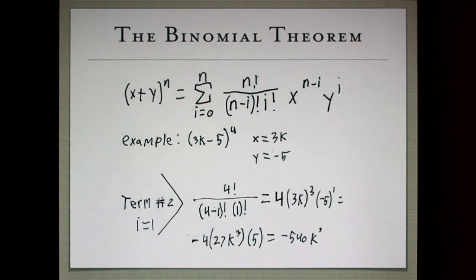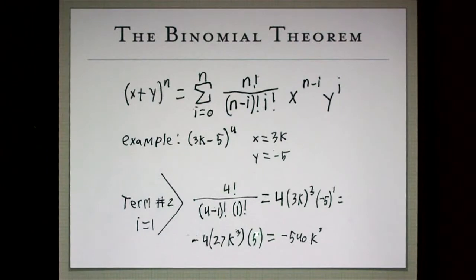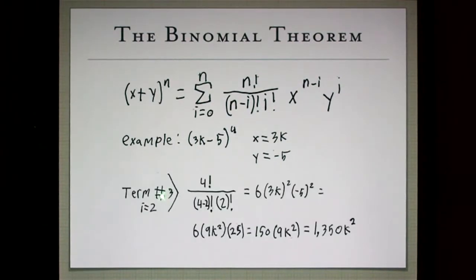Now, term number 2. Again, 4 factorial times 4 minus 1 factorial times 1 factorial is just 4. Then we substitute our variable maker. n minus i, or n minus 1 is now 3. So we get 4 times 3k cubed times negative 5 to the 1, because now it's y to the i also. When you multiply those up, you get negative 4 times 27k cubed times 5 equals negative 540k cubed.